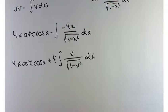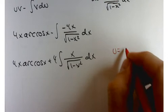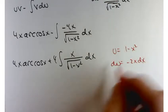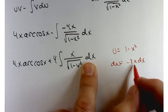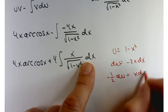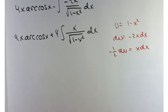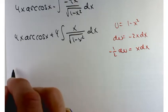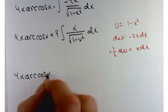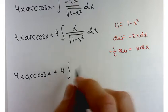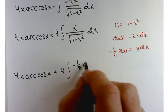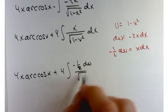I'll take out the negative 4, which will cancel with that negative. 4X arc cosine of X plus 4 times the integral of X over the square root of 1 minus X squared DX. Did this process help us out at all? Did integration by parts make this simpler or something we can handle? Kevin, what do you see here that we could do? Yeah, U substitution.